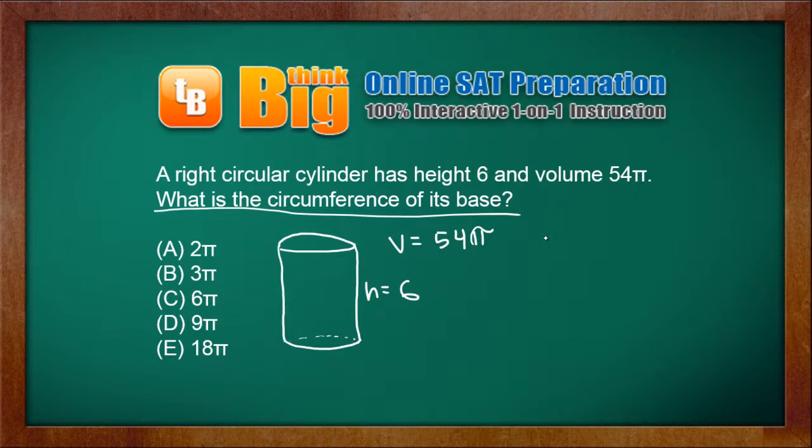The formula for circumference of a circle is 2 pi r, and the formula for the volume of a right circular cylinder is pi r squared h.